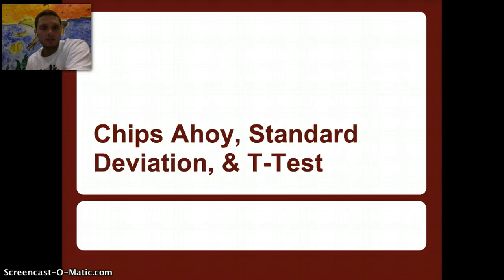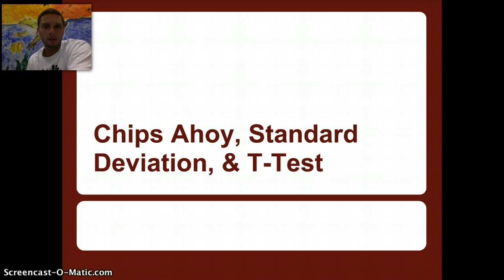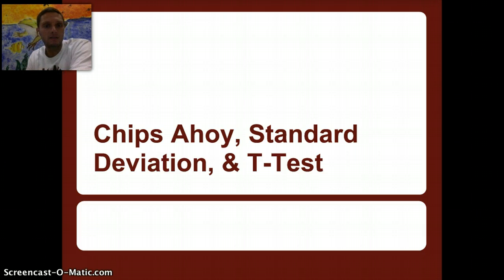One of the first things we need to do in IB biology is have a good understanding of how we can perform calculations to analyze experiments and data. We need to see if the data is valid and whether we can make conclusions based on it. In this opening activity, we're going to learn about standard deviation, t-tests, and mean or average in order to analyze data.